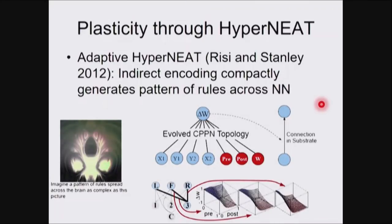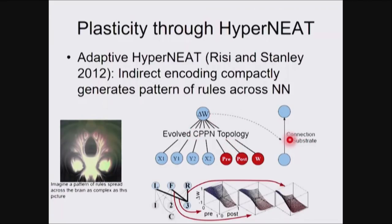There's also the idea of using indirect encoding to encode plasticity rules — using one network to encode the weights of another. This was recently used in gradient descent through things called DPPNs and hypernets, but it originated with HyperNEAT. If we can use one network to output a weight for every connection in another network, then we can output a pattern of learning rules — essentially painting a pattern of rules over a huge network. Imagine every light level here is a different rule, output by a pattern-producing network, creating brain-like structures with principled, regular patterns of rules, where each rule can be a very complex function.